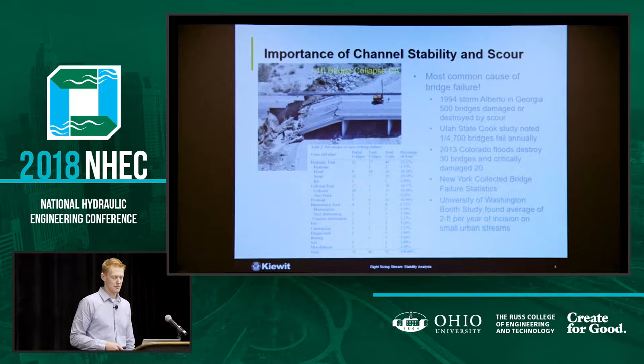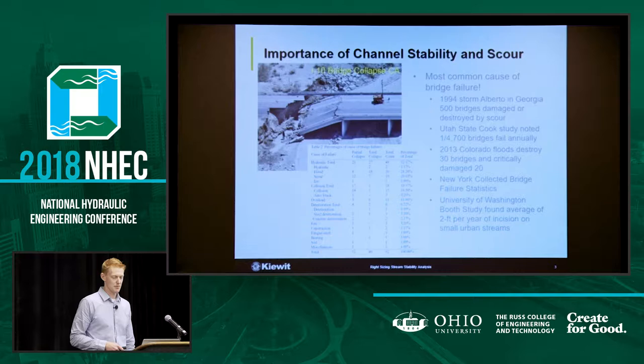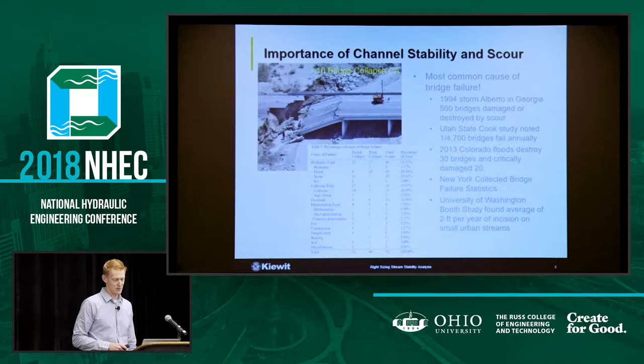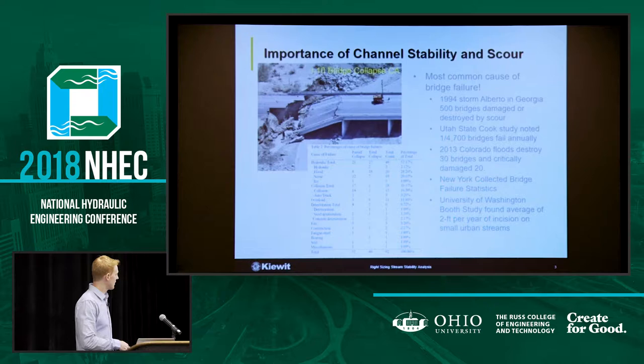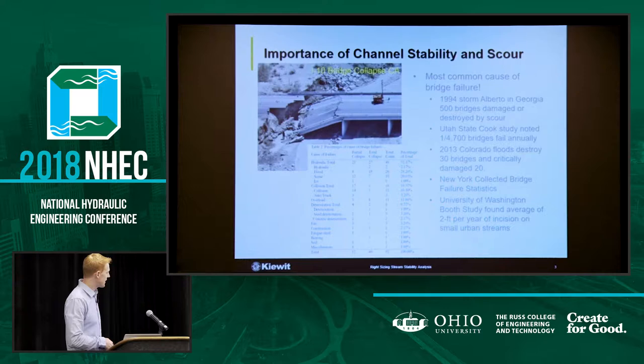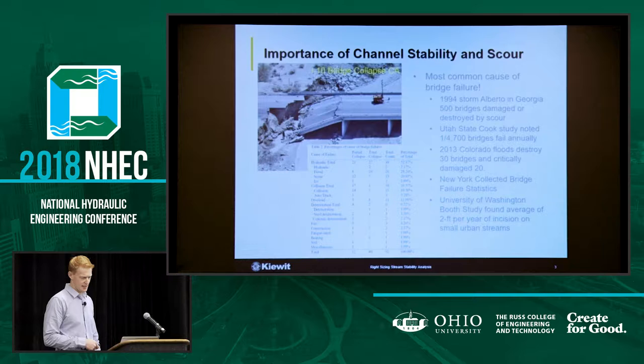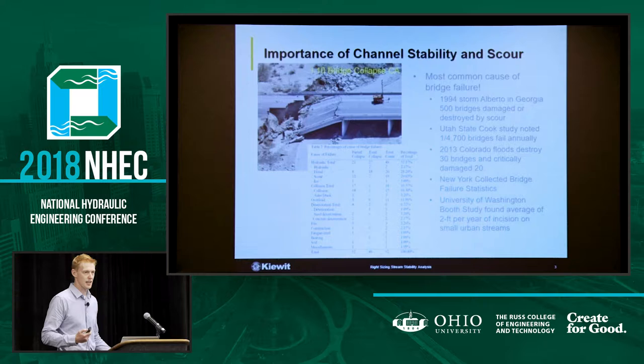I think everybody's probably seen a lot of statistics about stream stability and scour and erosion and the importance of the practice. I have seen very differing statistics on the number of bridge failures per year. However, I did throw up a table of bridges from New York, and you can see that in their dataset basically 20% failed from scour and another 30% from flood. Utah State did a study and said that one in 4,700 bridges will fail annually out of 500 or 600,000 over water. So this is a significant issue and something that needs to be considered.